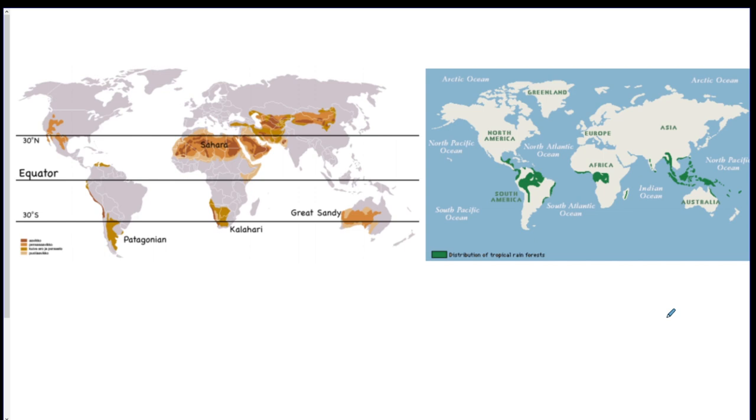This is a picture of where the deserts and the rainforests are. So you can see around 30 north, this is dry on that other chart, and so is this. So you get your deserts and deserts. And then over here at the equator, this is your moisture area by the equator. So you get all the rainforests.